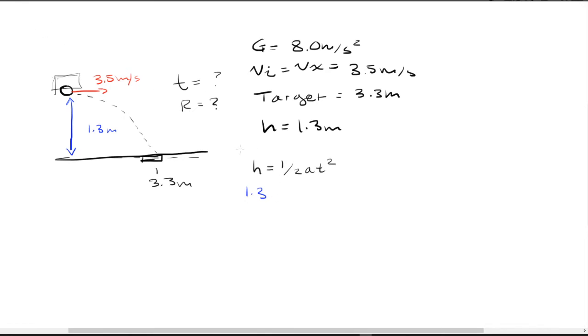...is equal to one half times gravitational, which is 8.0, times t squared. So it's going to be equal to 1.3 divided by 4 is going to be equal to t squared. And we're also just going to take the square root to get rid of the exponent and the t.